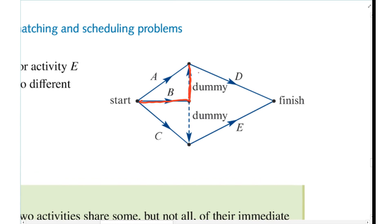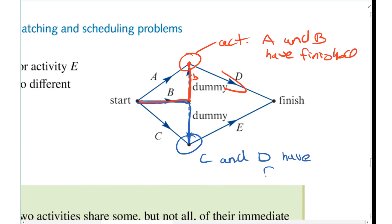So the dummy is saying at this point activity A and B have finished, and therefore D can move forward. And then B goes down to here, so we get to this point where C and D have finished, and therefore E can move forward. That's basically the dummy activity.